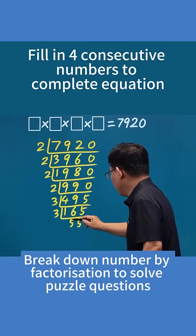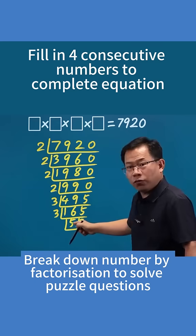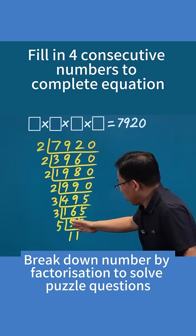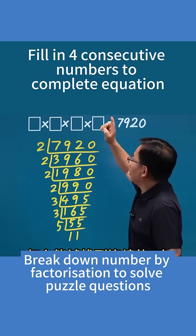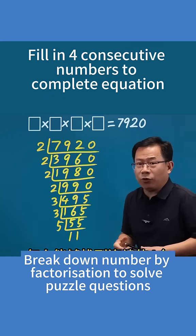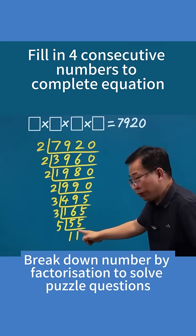3 times 5 is 15, 3 times 5 is 15. After factoring and getting many numbers multiplied together, how can we find four consecutive natural numbers? See — there's an 11.